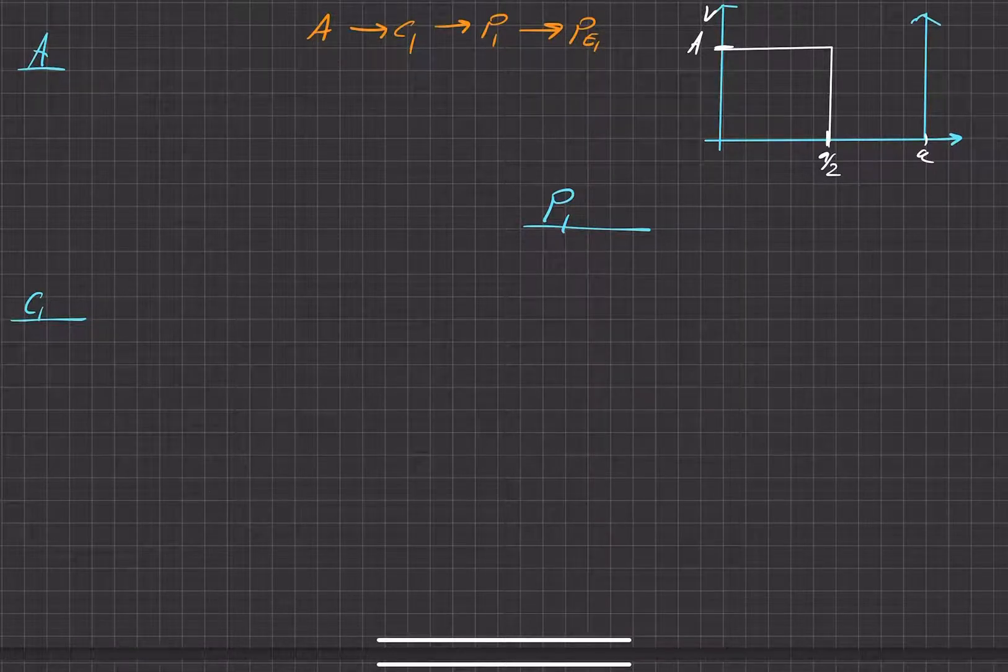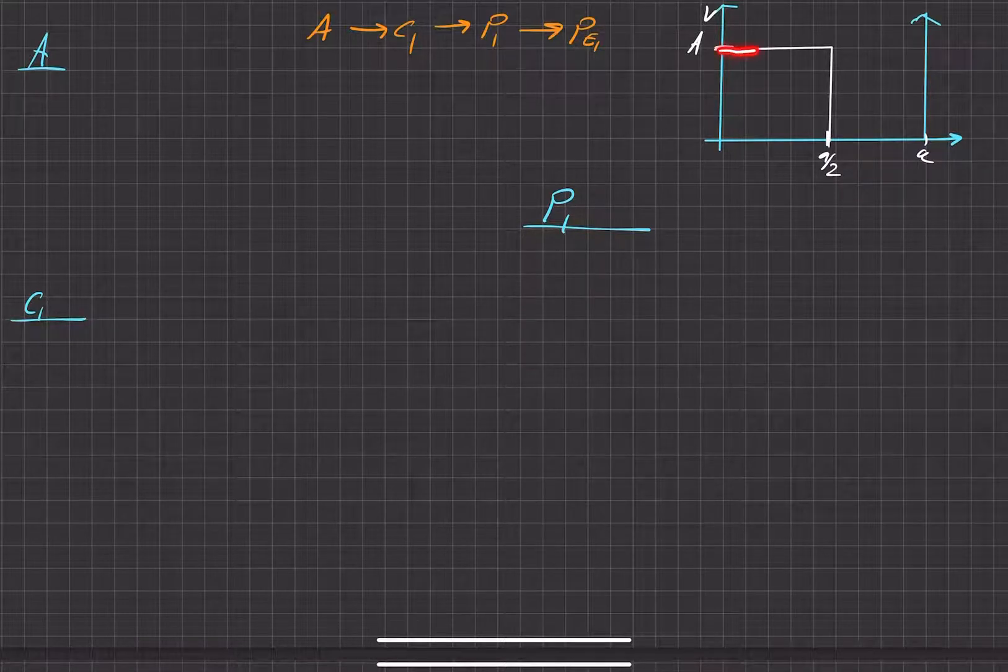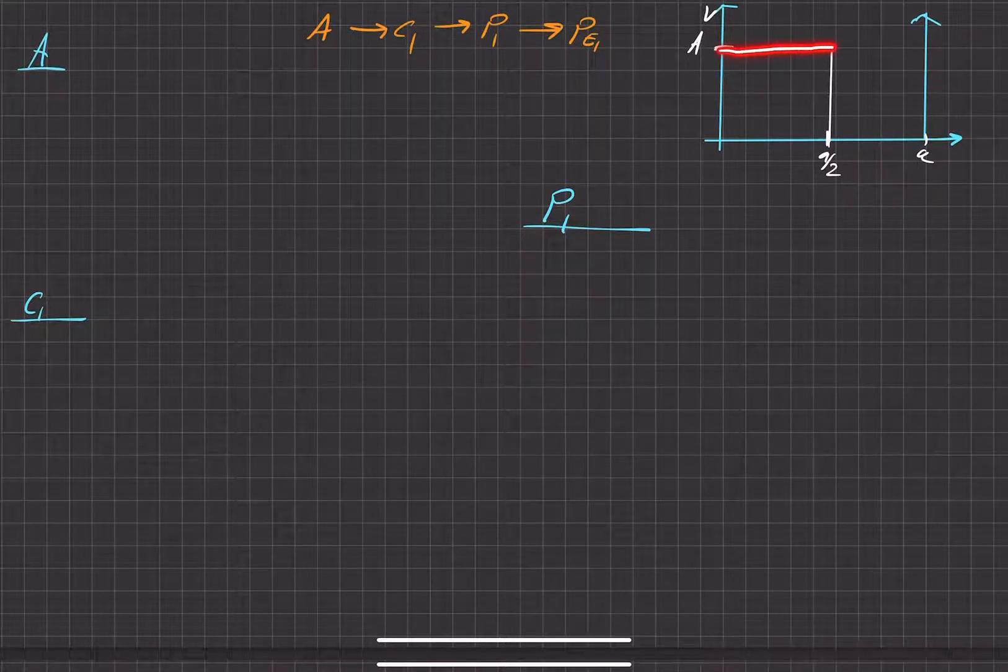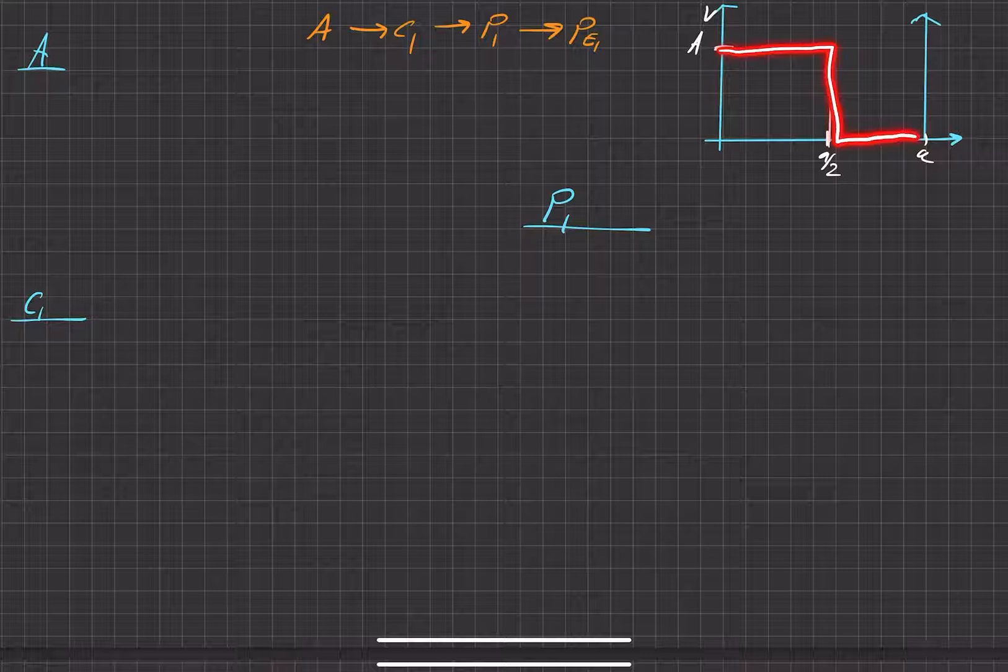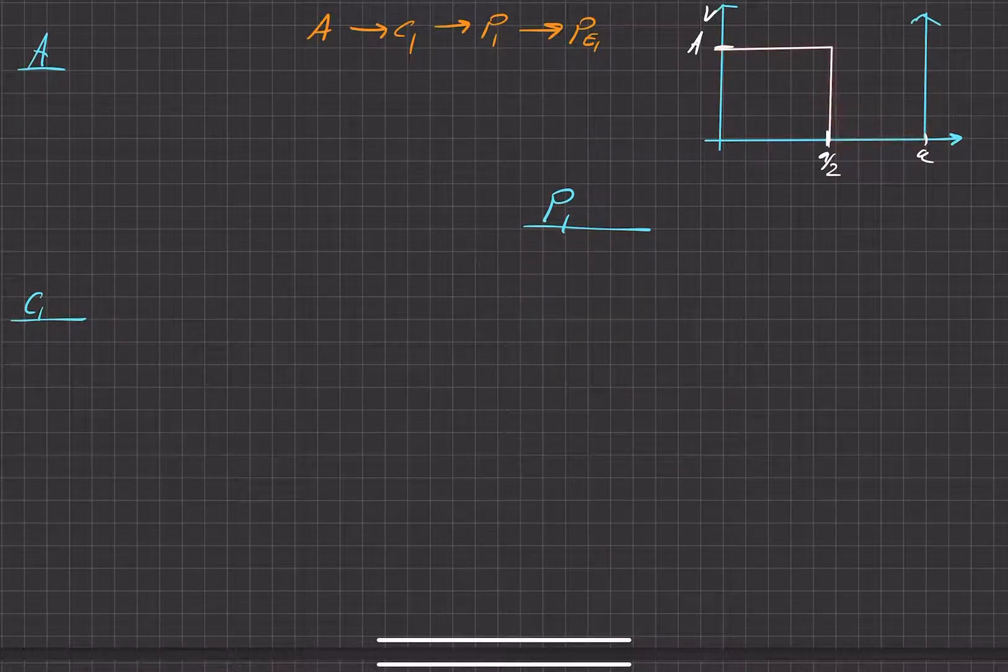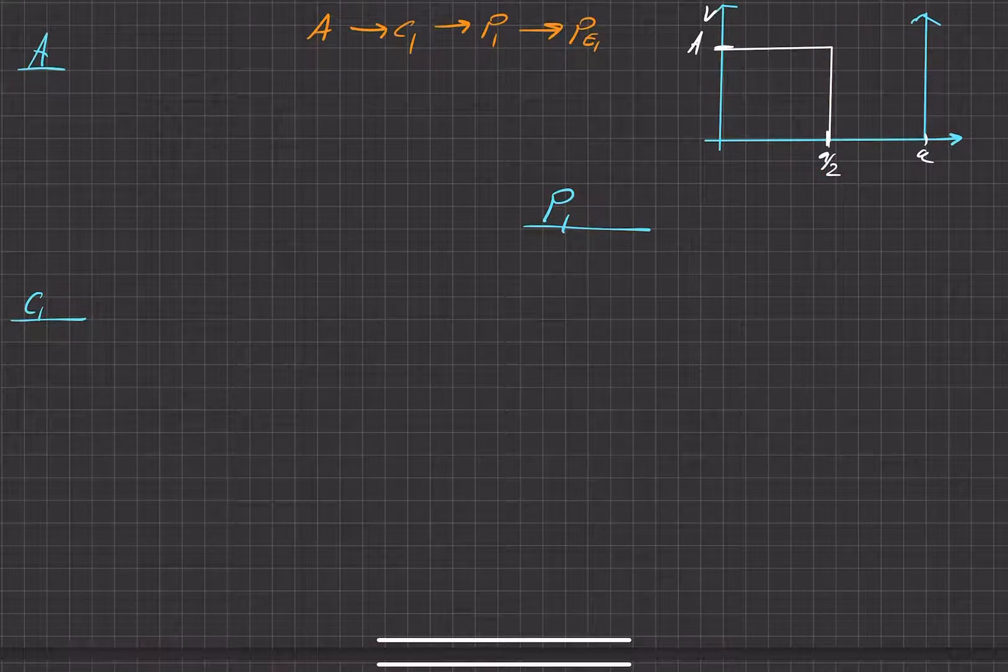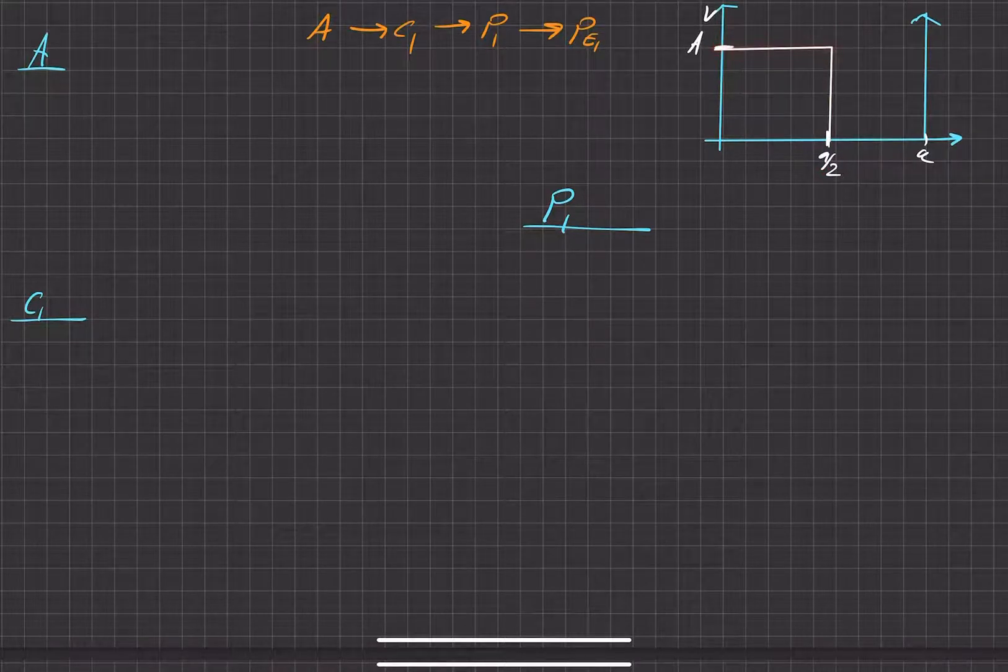In this problem, we're dealing with an infinite potential well problem with a wave function that is equal to A from 0 to a over 2, and then 0 from a over 2 to a. So it's going to look something like this, essentially a square that takes up half of the infinite potential well, linearly at least, not all the way up to infinity.